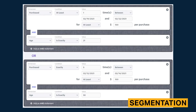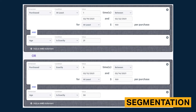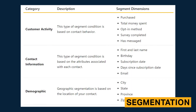Segmentation in SlickText is perfect for small businesses looking to send highly targeted and relevant text messages. SlickText offers a robust amount of conditions and allows you to segment any custom field of your choosing. You can use pre-built and custom fields to create segments.